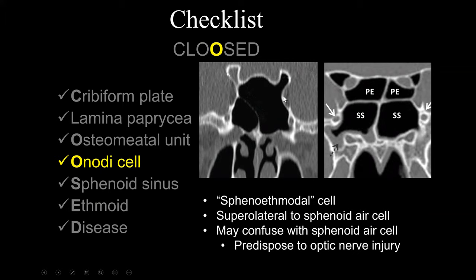The D in CLOSED is disease. It's important to be familiar with various diseases involving the sinuses. An air-fluid level — here in the right maxillary sinus — should not be called acute sinusitis, as sinusitis is a clinical diagnosis, not a radiological one. Instead, we can say these findings are consistent with the clinical diagnosis of acute sinusitis. This is the classical radiological appearance, but the diagnosis must be made clinically.